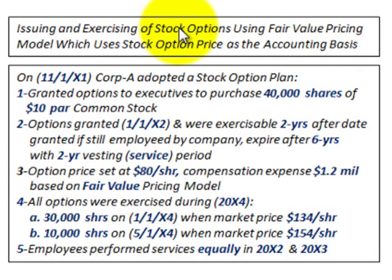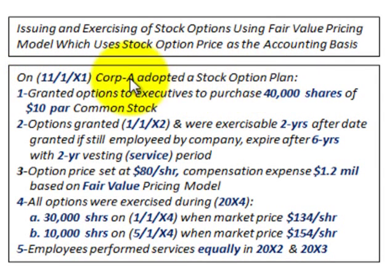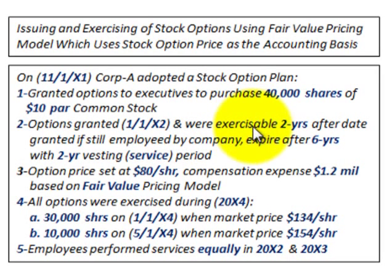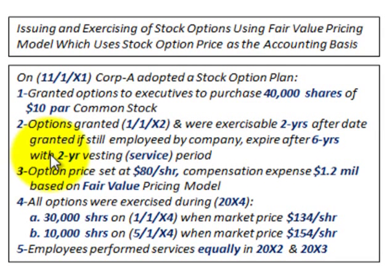We're going to be going over issuing and exercising stock options using the fair value pricing model, which uses the stock option price as the accounting basis. In 11X1, Corp A adopted a stock option plan where they granted options to their executives to purchase 40,000 shares of $10 per share par common stock. The options were granted in 11X2 and were exercisable two years after the grant date if the executive was still employed by the company, requiring a two-year vesting or service period.